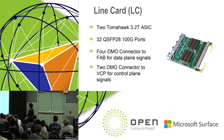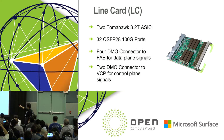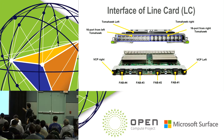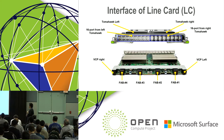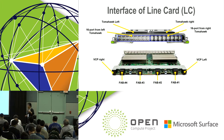Line card: the line card has two switch elements, two Tomahawk ASICs. On the front panel we support 32 QSFP ports. On the rear side there are also 32 100-gig connections — four orthogonal connectors. We also have two DMO direct-mounted orthogonal connectors to connect to the VCP. Front and rear view: the line card has 32 ports; the left 16 connect to the left switch ASIC, and the right 16 connect to the right switch ASIC. On the rear side, four data orthogonal connectors. On the very left and right are the control plane VCP-L and VCP-R connectors — carrying PCI, I2C, and management interfaces through the VCP connector.